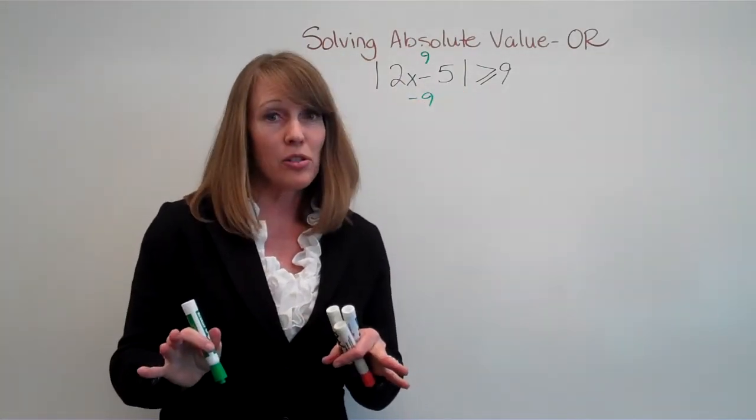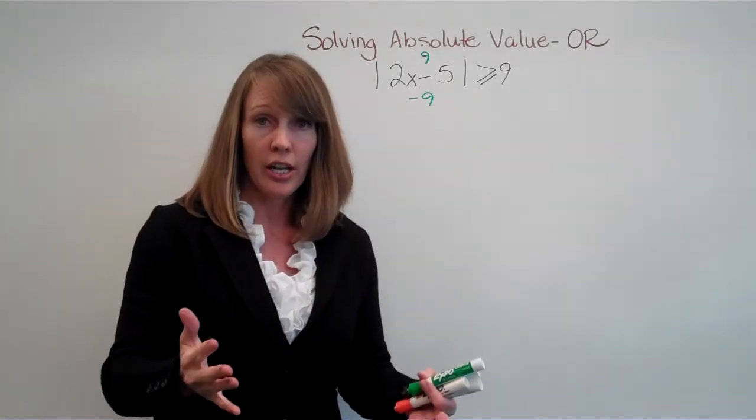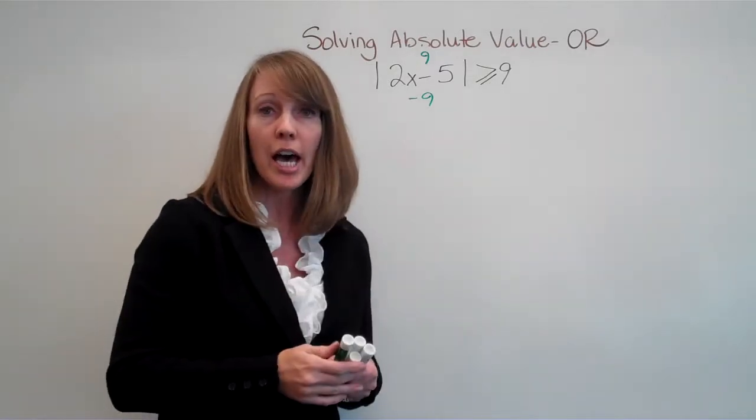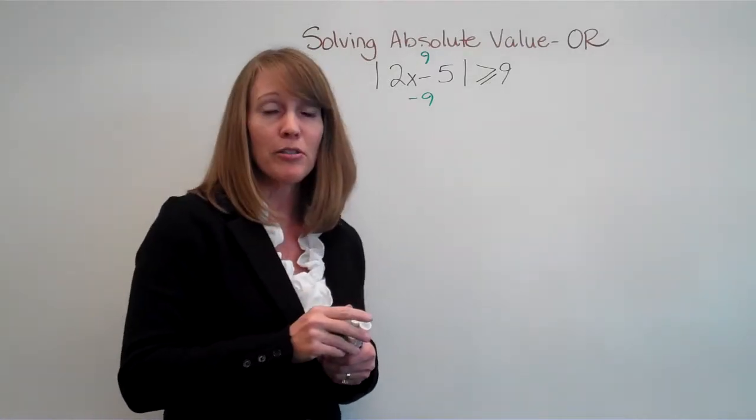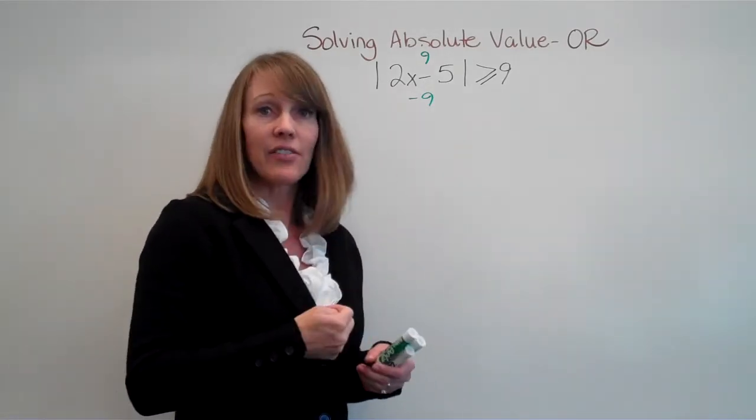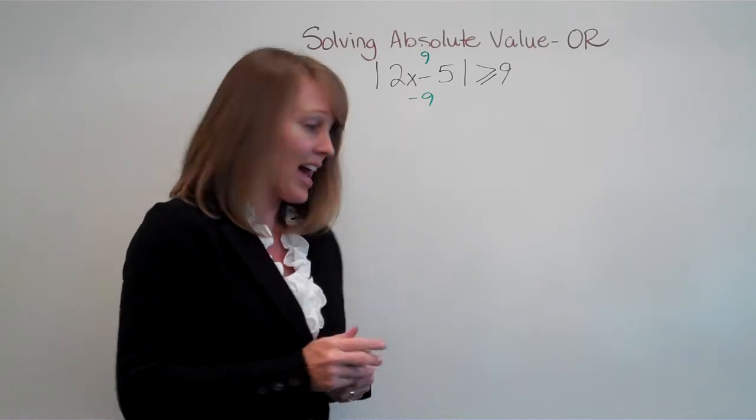But now with that absolute value inequality, it means that we're looking for all the numbers that are greater than positive 9. So 10, 11, 12, 13, 14 going on up. But because it's an absolute value, that would also include those negative numbers: negative 10, negative 11, negative 12. So we're looking for all the numbers that satisfy that equation.